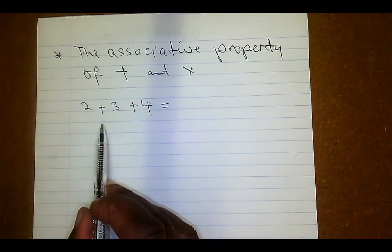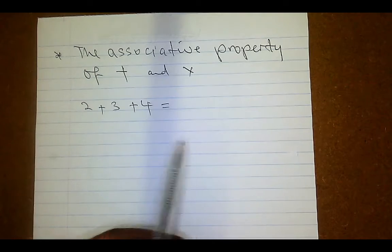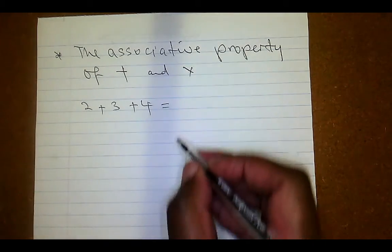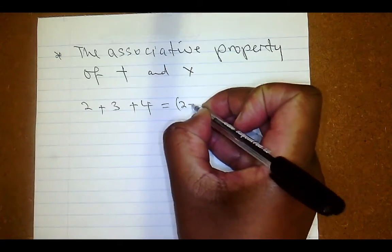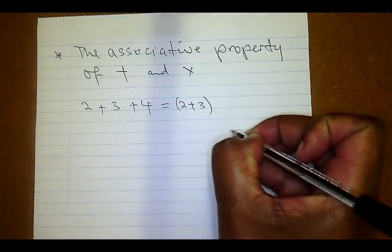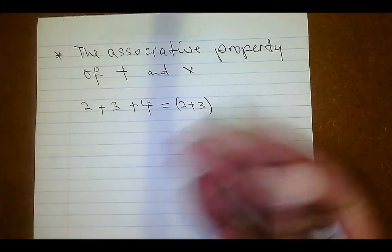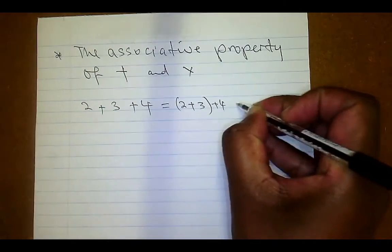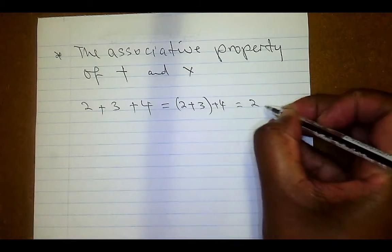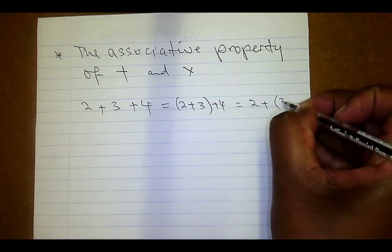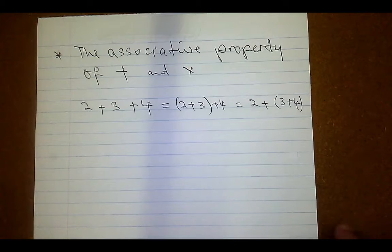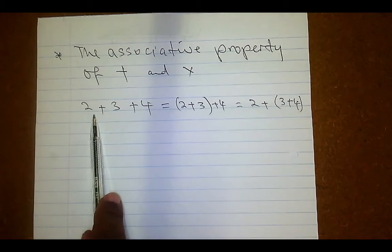The associative property says that you can group any two of these numbers together and work out their answer before you add the other number. For instance, two and three can be grouped together — work out what two plus three is first before you add the four. Or you could decide to group three and four together and you will get the same answer.